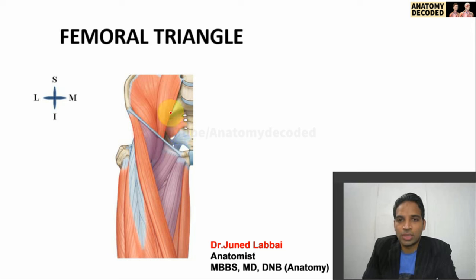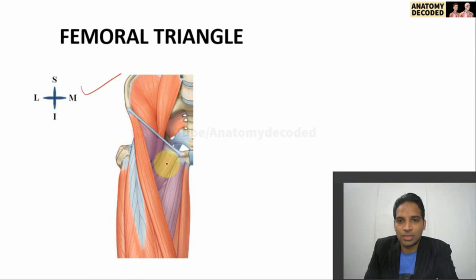Here in this image we can see the right thigh from the anterior aspect. The orientation marks are given, and this purple colored marked area is the femoral triangle. It's a triangular hollow in the front of the thigh in the upper part, more on the medial aspect.